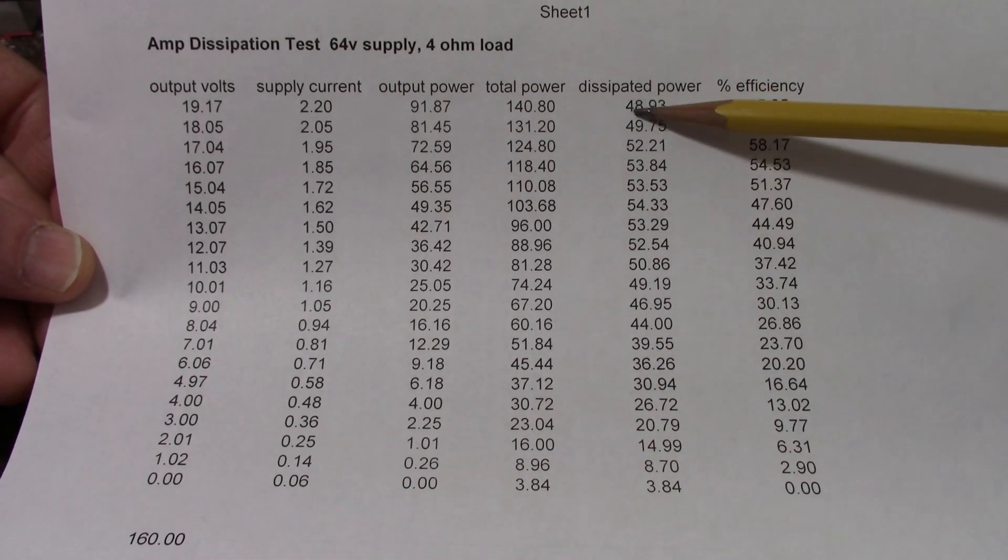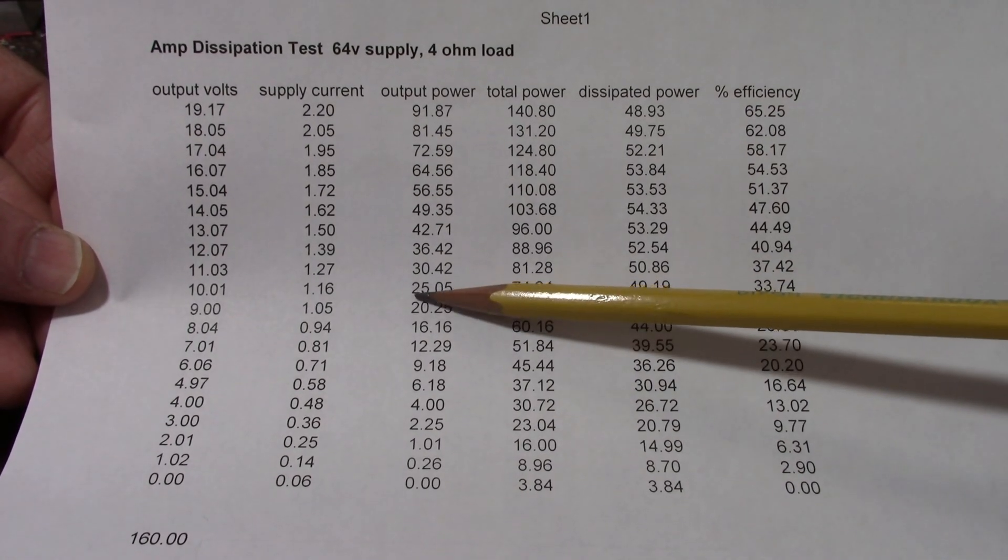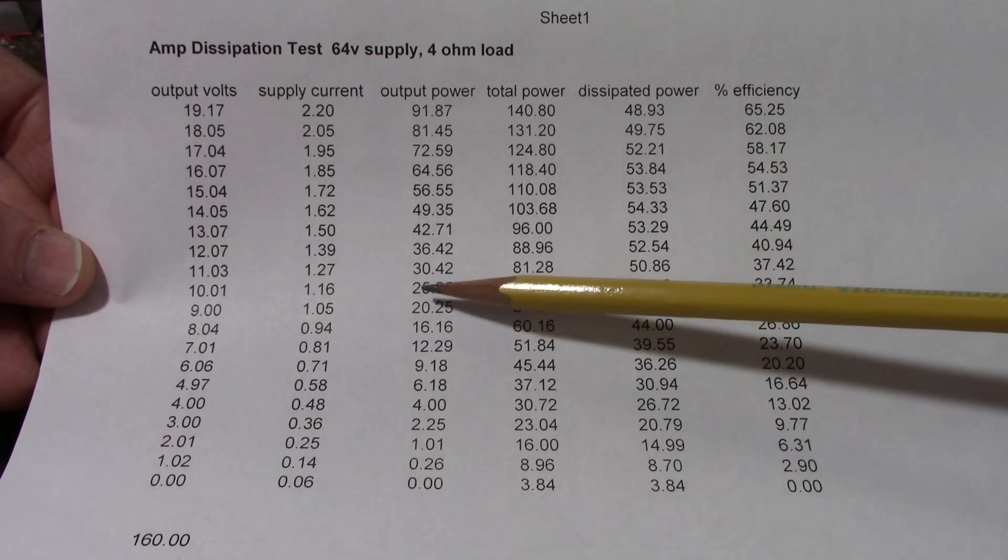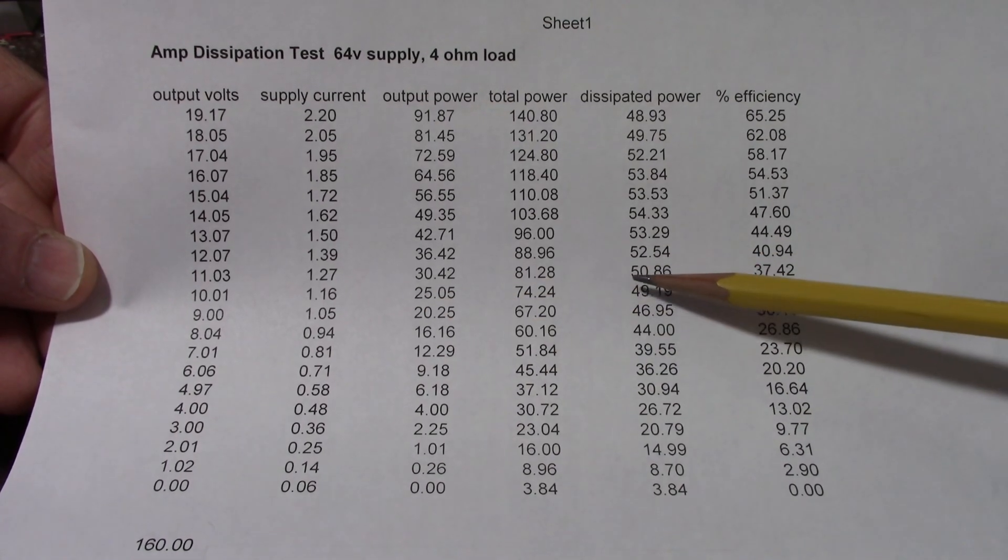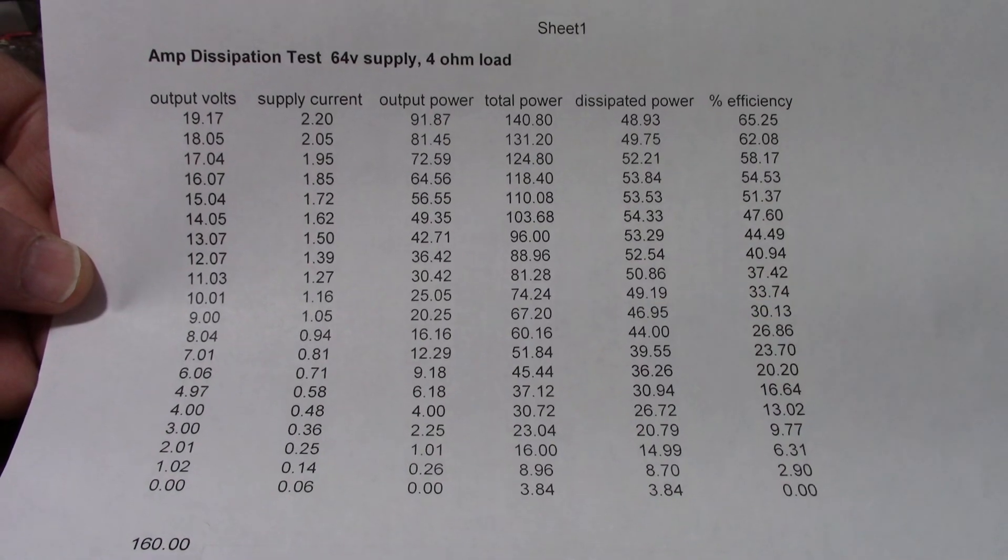So we're back to about the same level, 49 watts dissipated, but look we're at 25 watts which is a little more than one-fourth of the maximum output power yet we're still dissipating that much power, 49 watts. So from there it keeps on decreasing down to zero.